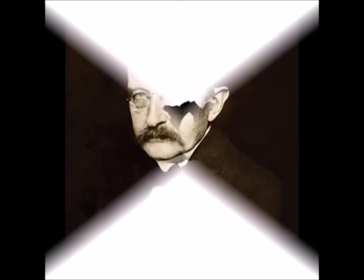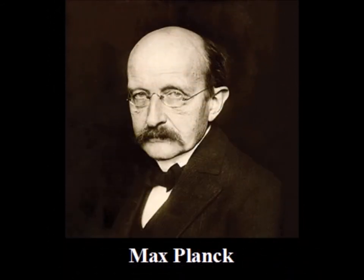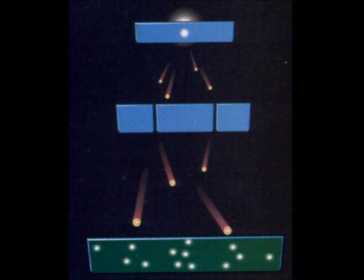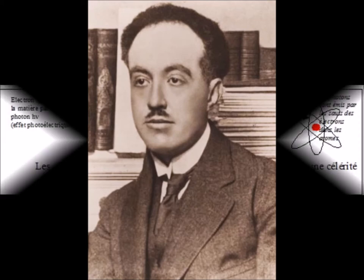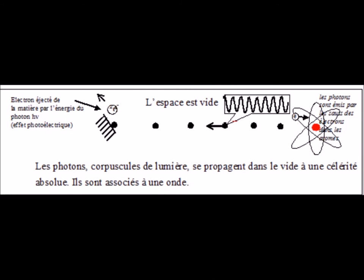At the same time, the discovery of the quantified, and therefore corpuscular, nature of light shook physics. The ether was then eliminated. Light can no longer be a vibration of a medium. It is a corpuscle bearing an associated wave. This is the theory of Louis de Broglie. The light is made up of corpuscles, the photons. These corpuscles have an associated wave that explains the undulatory properties of light. This wave is the vibration of an electromagnetic field. It is transverse. This explains the polarization, in particular, property that does not exist in the waves of continuous media.